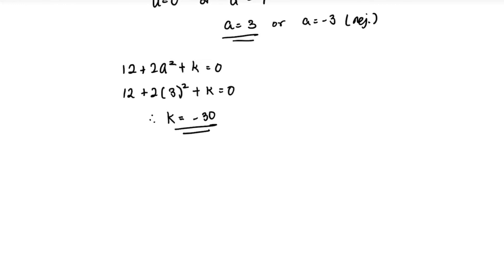So the answers are a = 3 and k = −30. It's a complex numbers question that is a bit complex, but definitely manageable. If you learned something, give this video a like and subscribe to the channel.